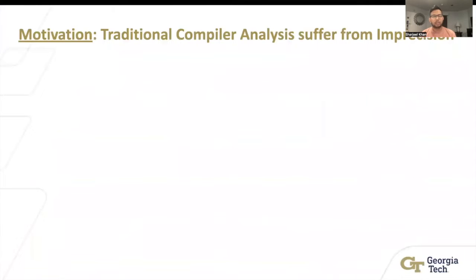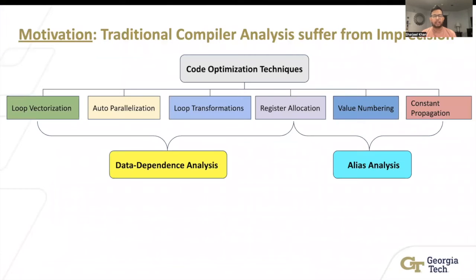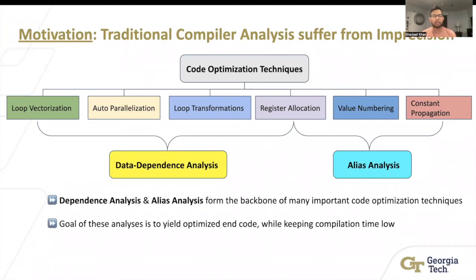Traditional compiler analysis like data dependence analysis and alias analysis are the backbone of numerous important compiler optimization techniques like loop vectorization, register allocation, and global value numbering. These analyses yield optimized high-quality code while keeping compilation time low.